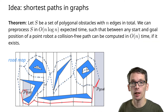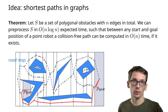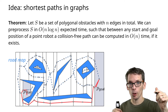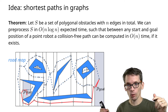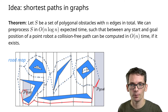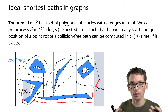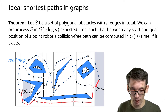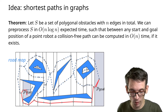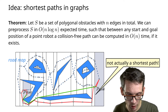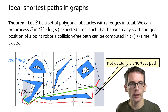So we have our first result: given polygonal obstacles with overall n edges, we can preprocess them in O(n log n) time such that, given a point-shaped robot that wants to go from start to goal, we can compute a collision-free path in linear time if it exists. It is the shortest path in the graph — at least shortest in terms of number of trapezoids traversed — but it is not the actual shortest path, as you also see in this example. The actual shortest path would go around the obstacle more directly.